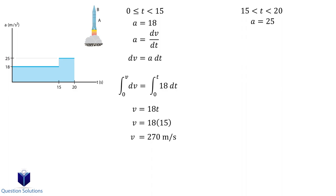So in other words, the missile is traveling at 270 meters per second at 15 seconds. Let's switch to the next segment and find its velocity equation. Remember that the missile is now traveling at 270 meters per second and 15 seconds have elapsed. Those become our lower bounds for our integral.